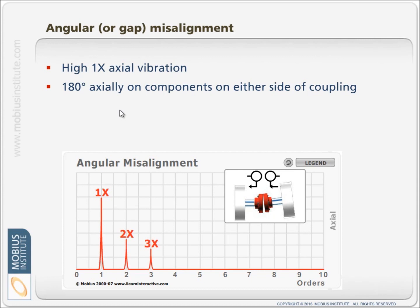If there is angular or gap misalignment, then we expect to see far more axial vibration, particularly at 1X. That's because we've got this gap and if you like, it's a push-me-pull-you situation and we'll therefore see the phase out of phase when the phase readings are corrected in that axial direction.